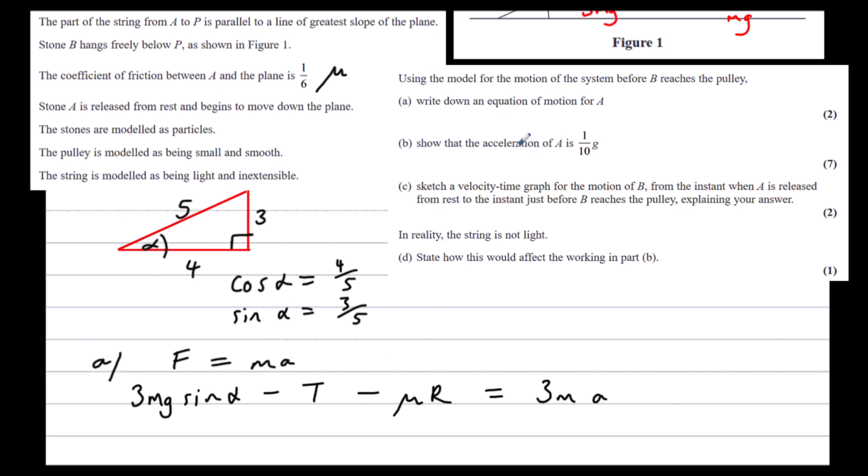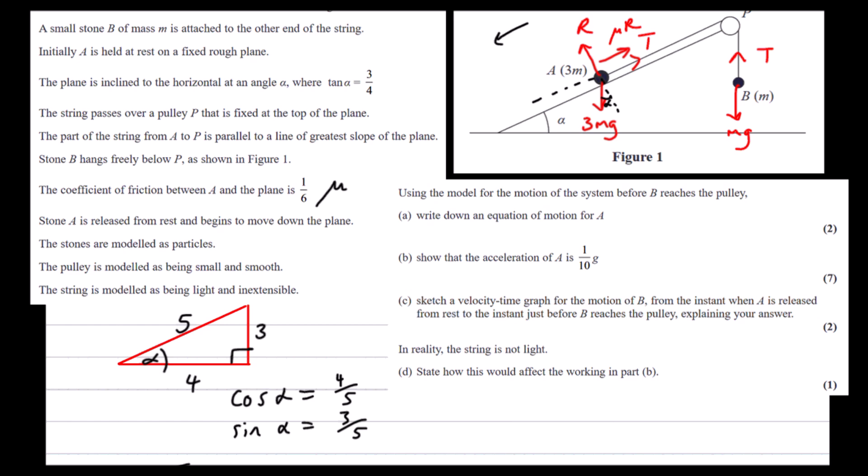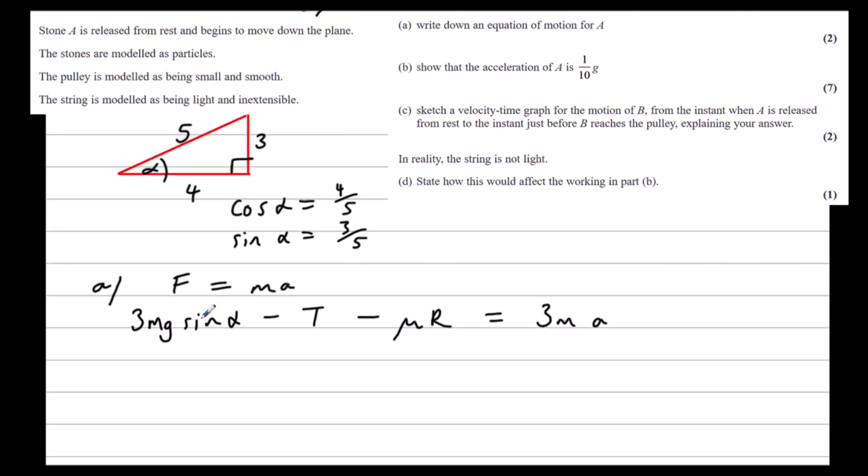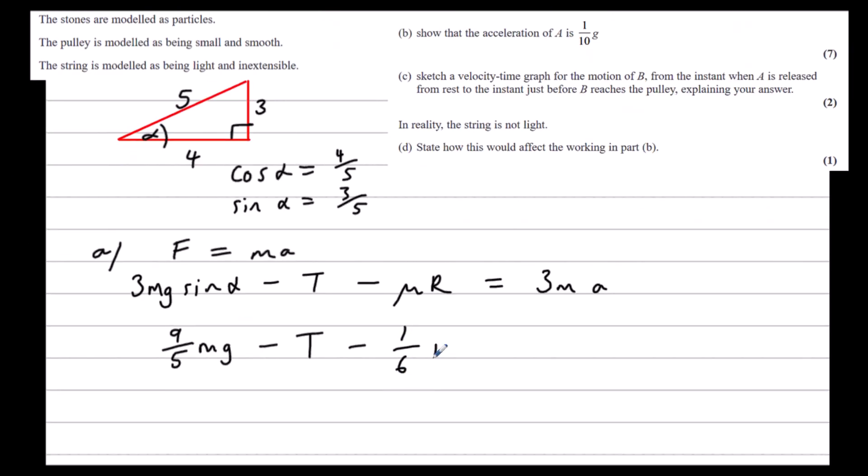But we're going to need to carry on working to work out part B, which is showing that the acceleration of A is 1 tenth g. So we can change sin alpha into three-fifths. So we'll have three-fifths times three, which would be nine-fifths. So nine-fifths mg minus the tension minus one-sixth r equals 3ma.